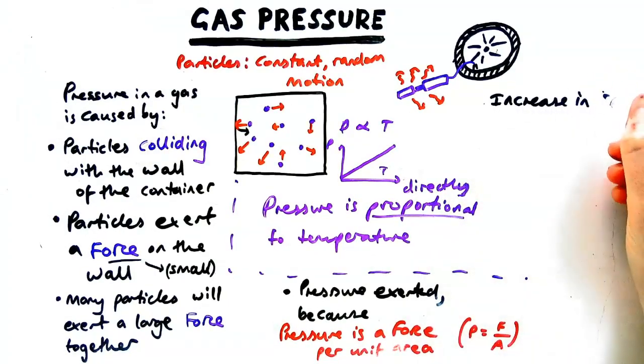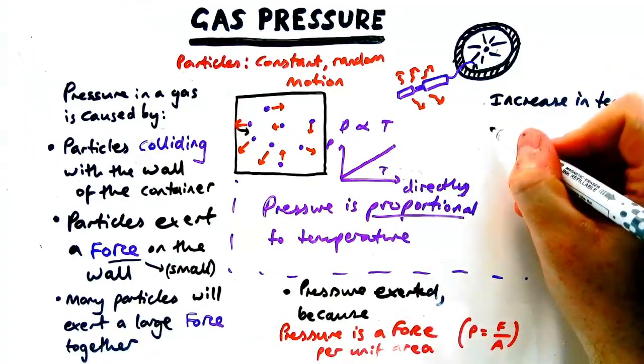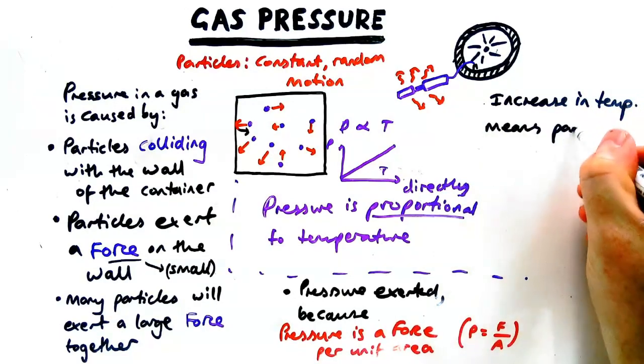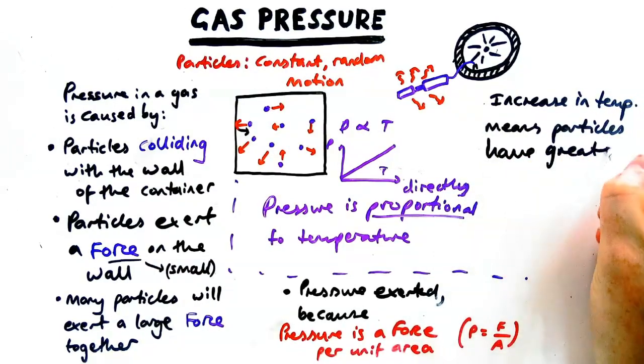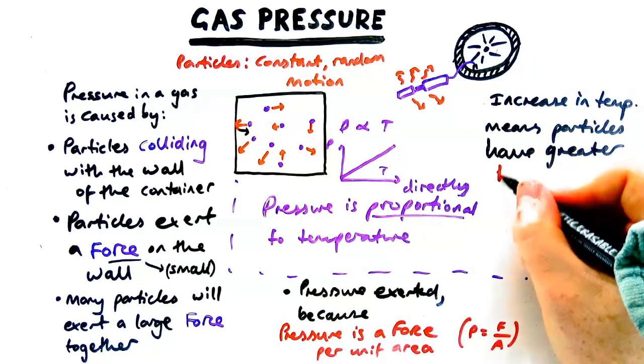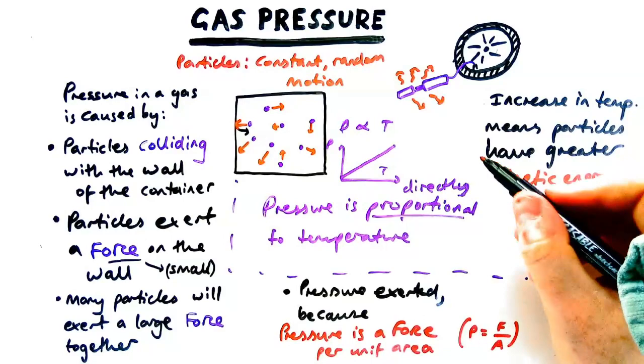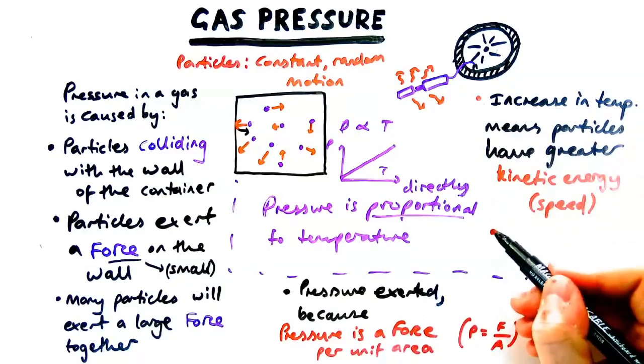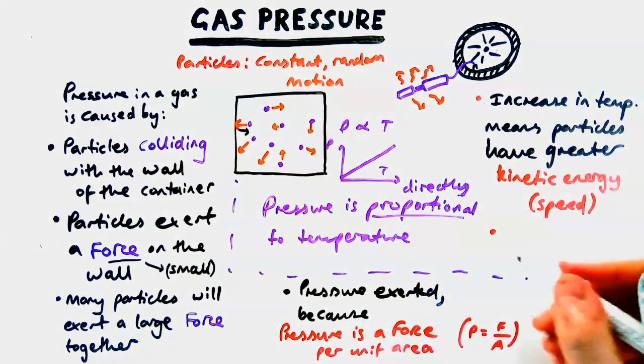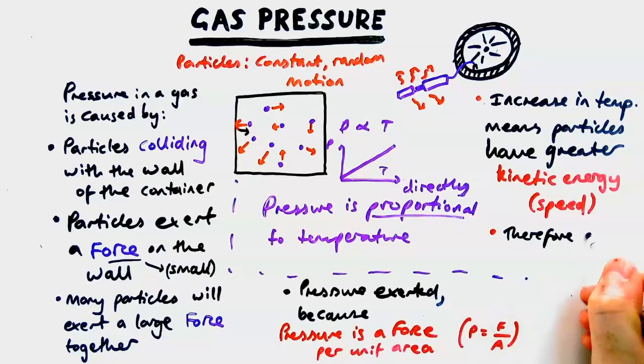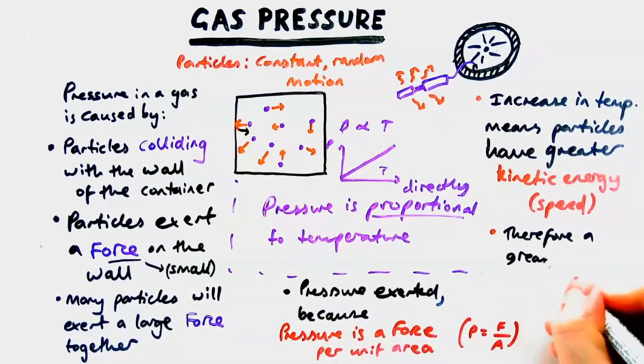So let's think about the particles. So an increase in temperature means that particles have a greater kinetic energy. Now you can say speed here that's fine but kinetic energy is normally the first thing on a mark scheme. So particles have a greater kinetic energy. When they have a greater kinetic energy that means they'll have a greater force when they collide with the wall.